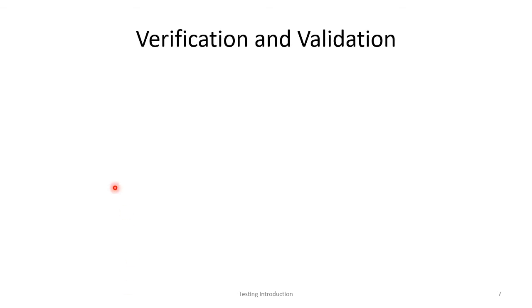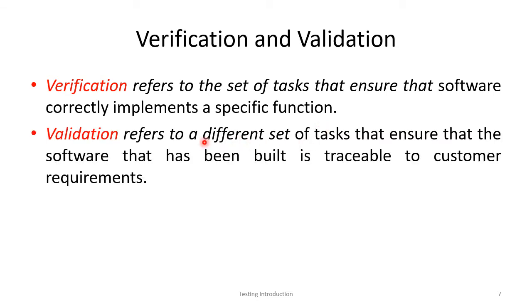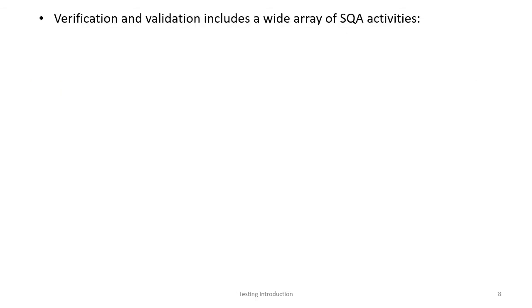Now we will see two terms: verification and validation. Verification refers to the set of tasks that ensure that software correctly implements a specific function. Validation refers to a different set of tasks that ensure that the software that has been built is traceable to customer requirements — that customer requirements are satisfied. Verification and validation together include a set of software quality assurance activities.